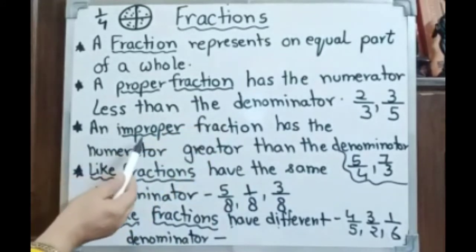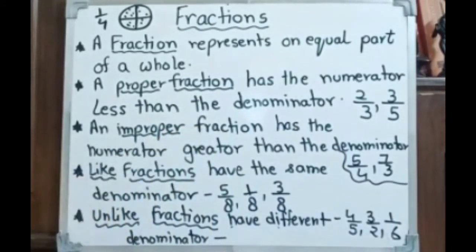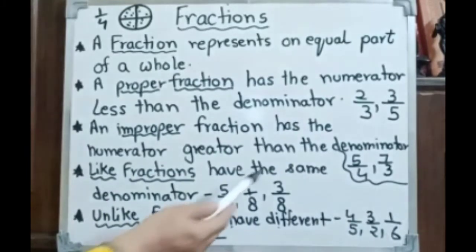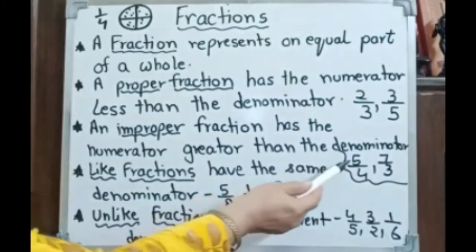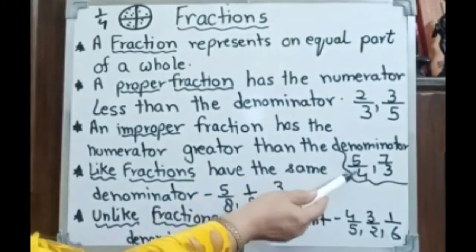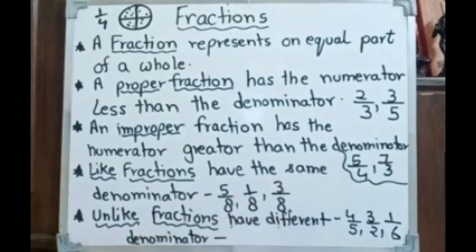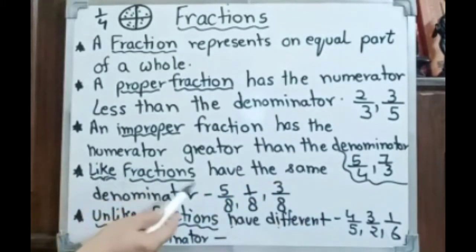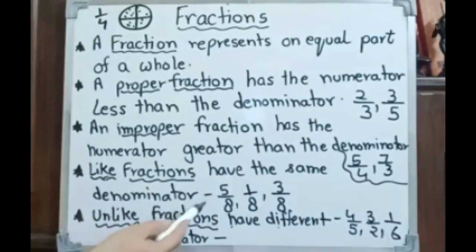An improper fraction has the numerator greater than the denominator — for example, 5 by 4, meaning the numerator is greater than the denominator.